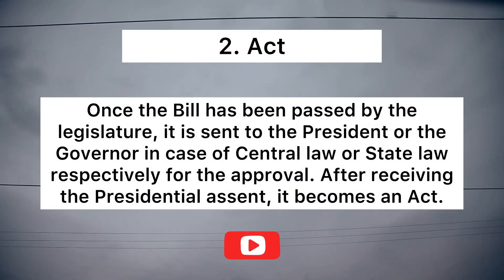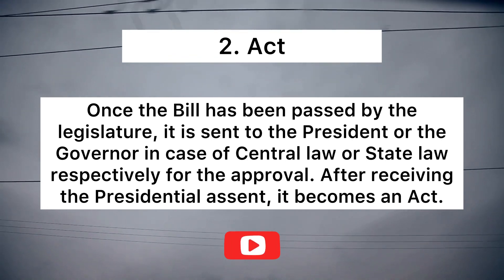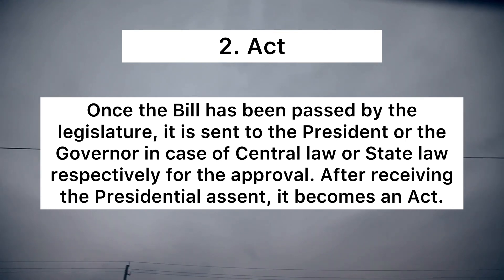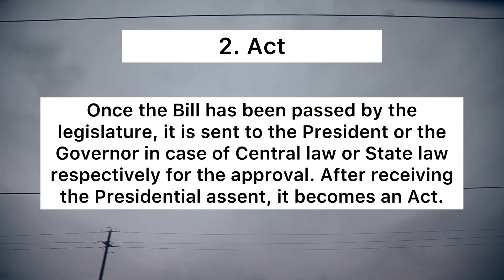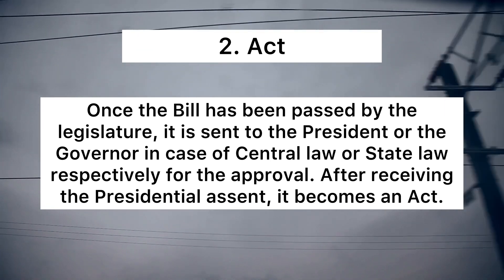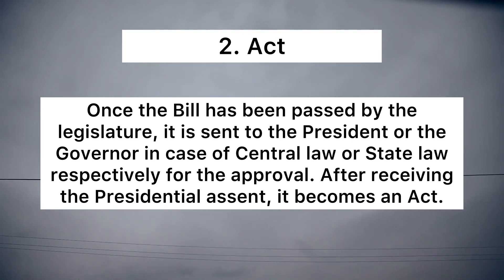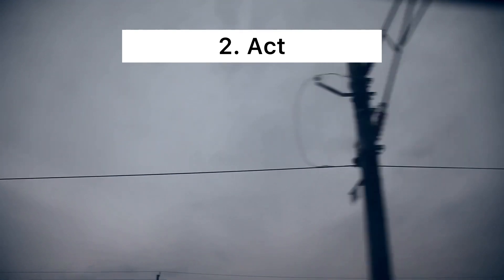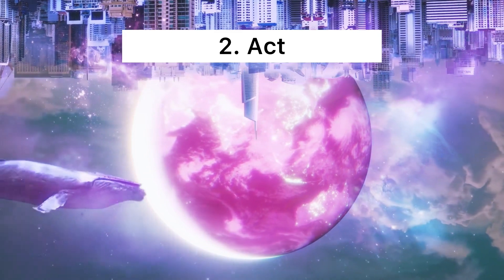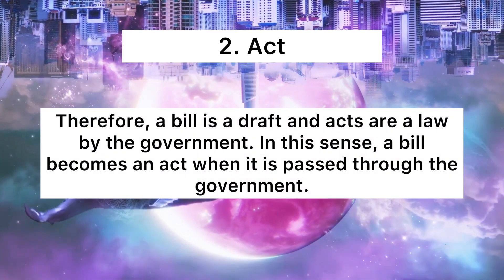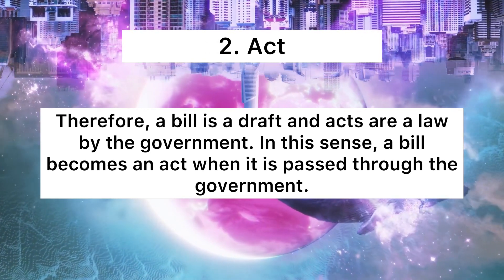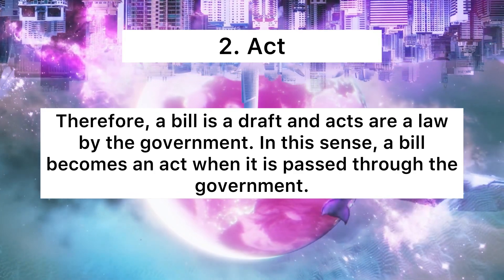The second one is Act. Once the Bill has been passed by the Legislature, it is sent to the President or the Governor — in the case of central law or state law respectively — for approval. After receiving the Presidential assent, it becomes an Act. Therefore, a Bill is drafted and acts are a law by the government. In this sense, a Bill becomes an Act when it is passed through the government.